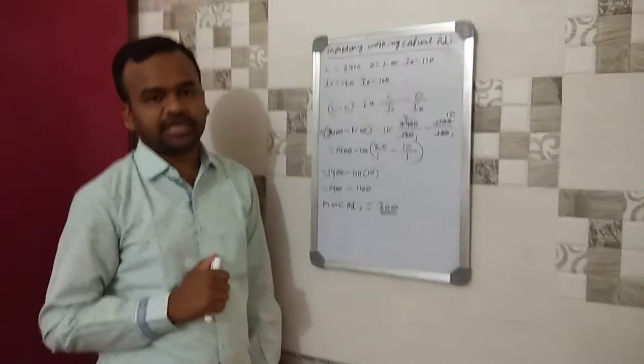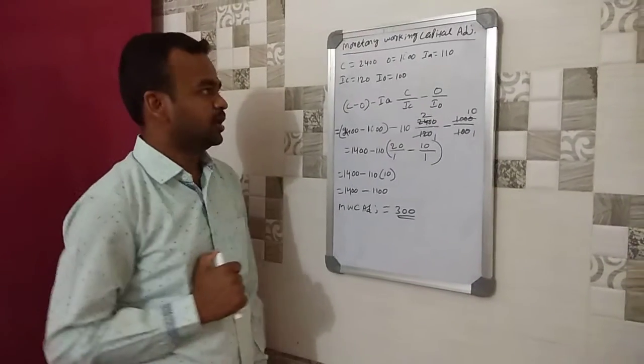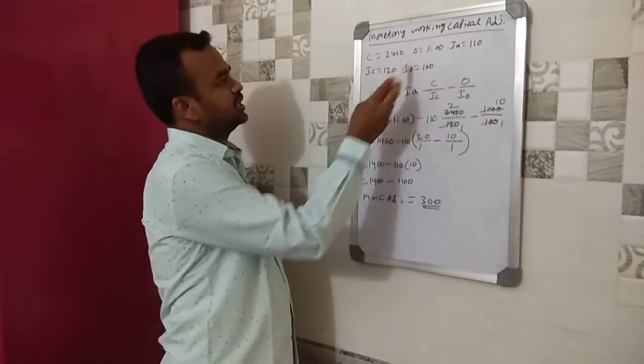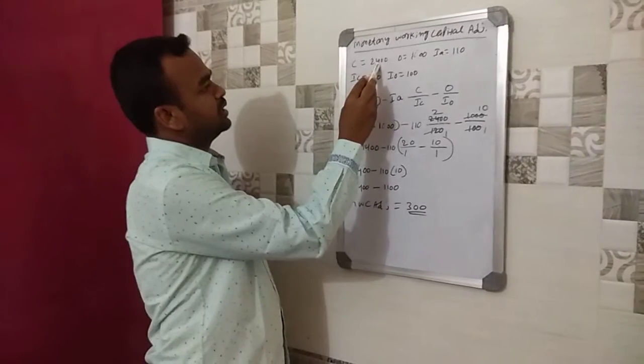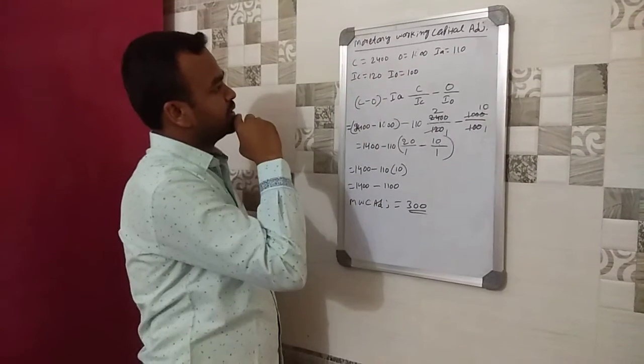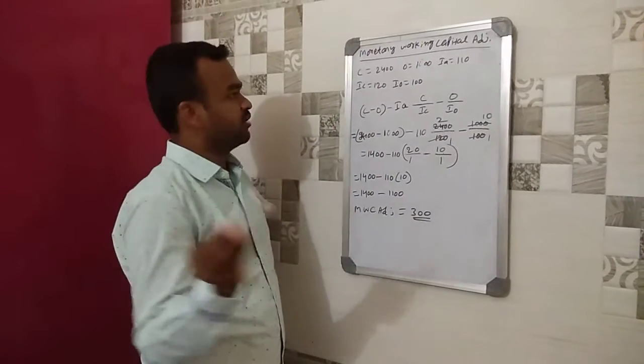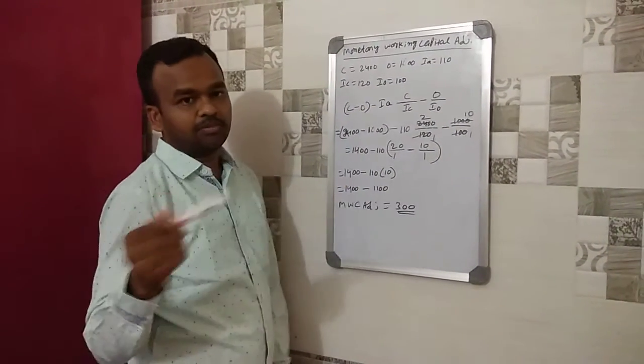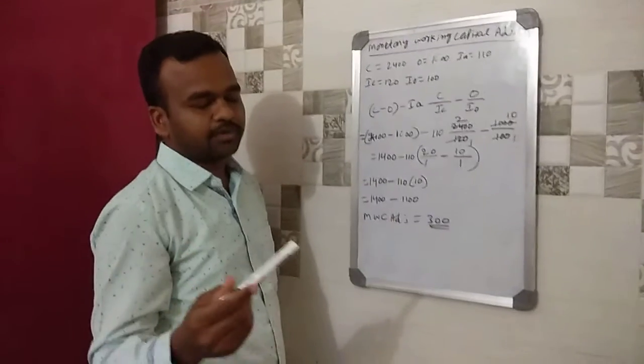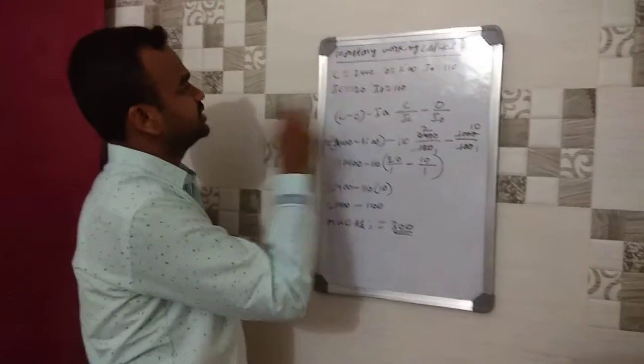Now let us calculate the monetary working capital adjustment through the formula. Here we have written the values given in the problem, and we have calculated closing working capital and opening working capital that we have taken into consideration.